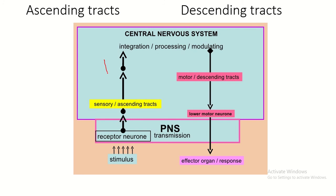Tracts are of two types: ascending tract and descending tract. The descending tract carries motor orders from the motor cortex of the cerebrum toward the effector organ, for example skeletal muscle. The ascending tract carries sensory information, which is first received by the receptor and, using three sets of neurons, this sensory information reaches the sensory cortex of the cerebrum.